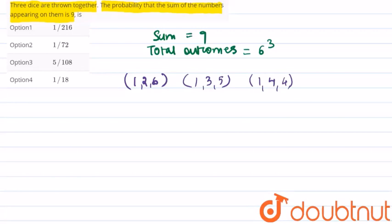considered as 1, 5, 3 but it would repeat with the second case, so the next case is 2, 2, 5. The fifth case is 2, 3, 4 and the sixth case is 3, 3, 3.